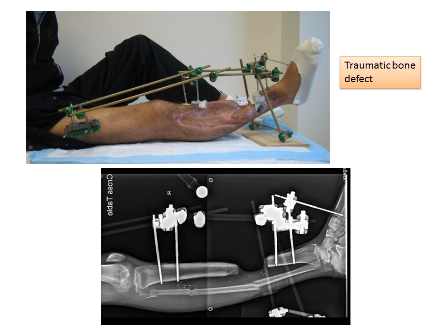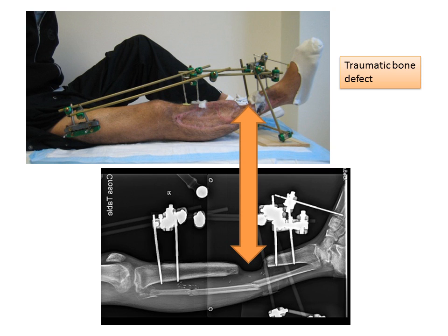This is an example of a 25-year-old man who suffered a traumatic bone defect of his tibia. You can see there's a large segment of bone that is missing. He presented to me with this external fixator supporting his leg. This is a limb salvage type situation, and it's difficult to reconstruct this bone defect.